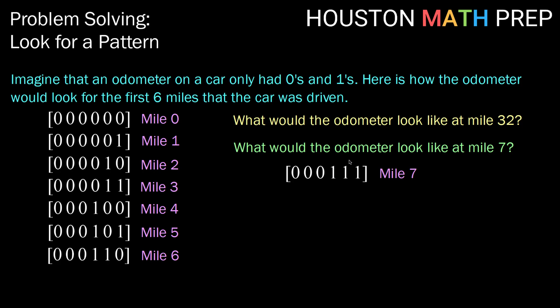Now that we have a one in all three places, what do you think is going to happen when the odometer hits mile eight? Here's what happens. When the odometer hits mile eight, because we had filled up ones in all the places we had reached so far, we jump over into the next spot.